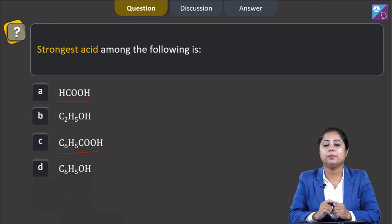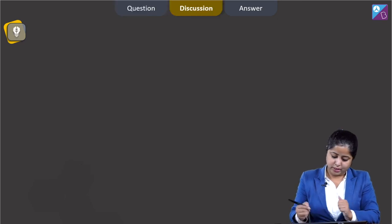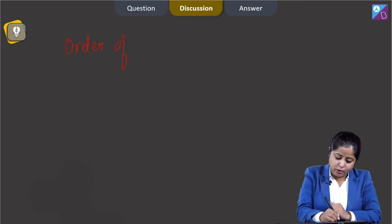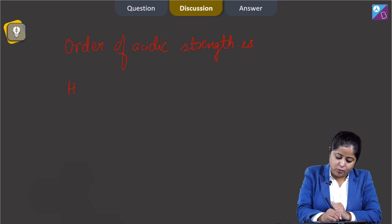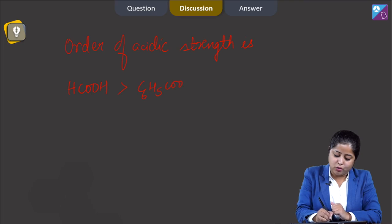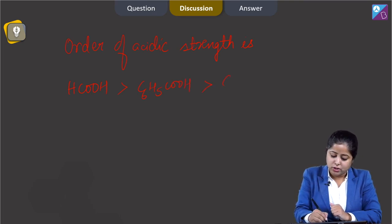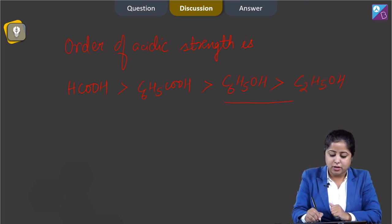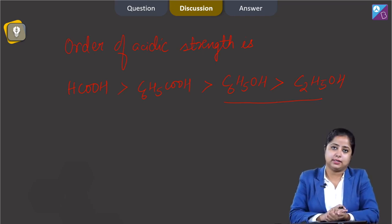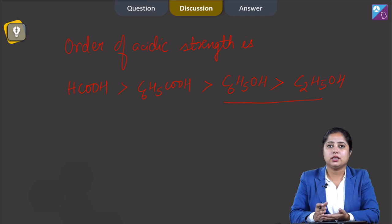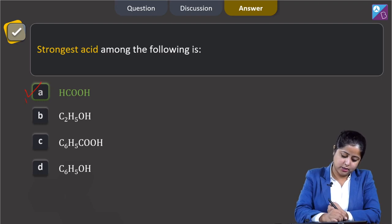As a result, methanoic acid (HCOOH) is the strongest acid. The order of acidic strength is: HCOOH > C₆H₅COOH > C₆H₅OH > C₂H₅OH. Among phenol and ethanol, phenol is more acidic due to resonance, while ethanol has no resonance so it is least acidic. Therefore the correct answer is option A.